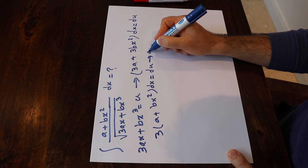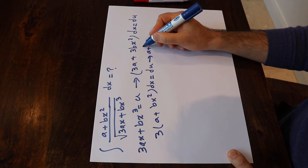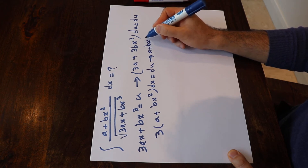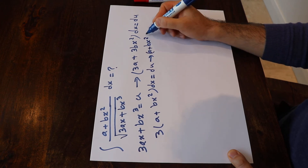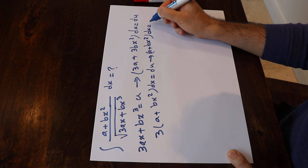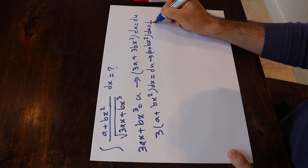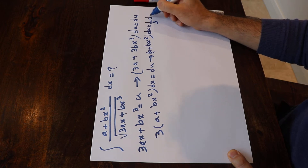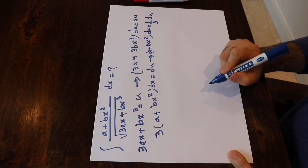In other words, you can write (a + bx²) times dx is equal to 1 divided by 3 du.